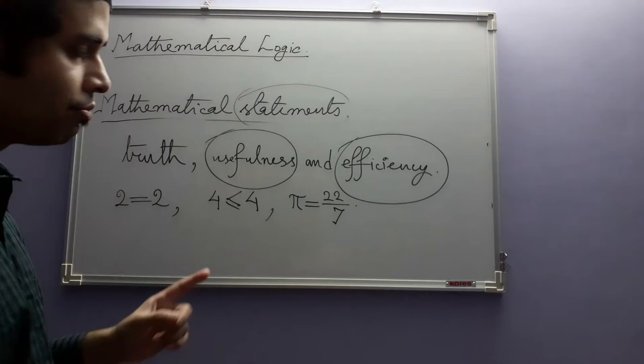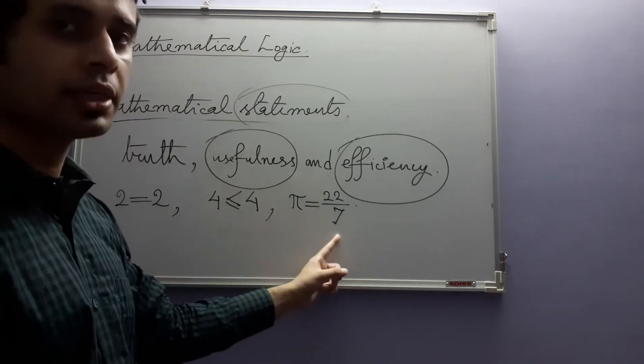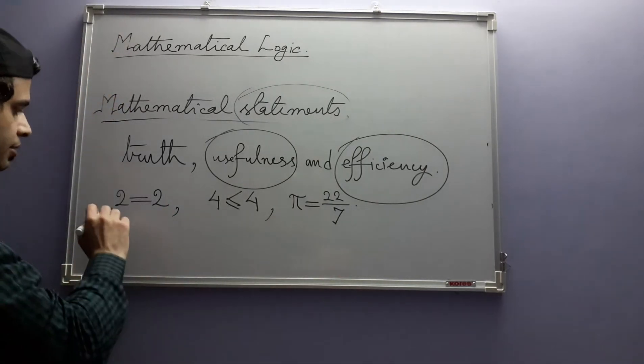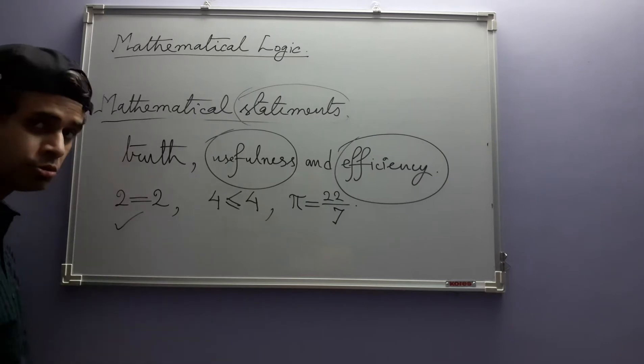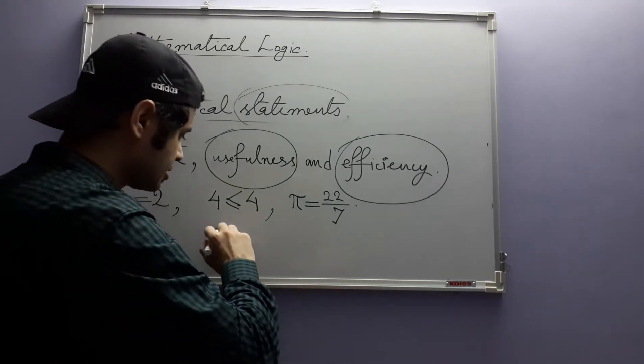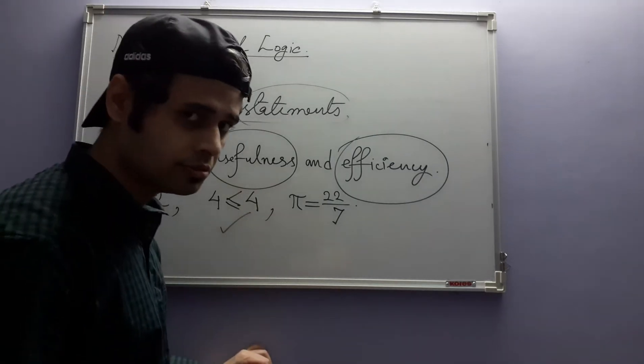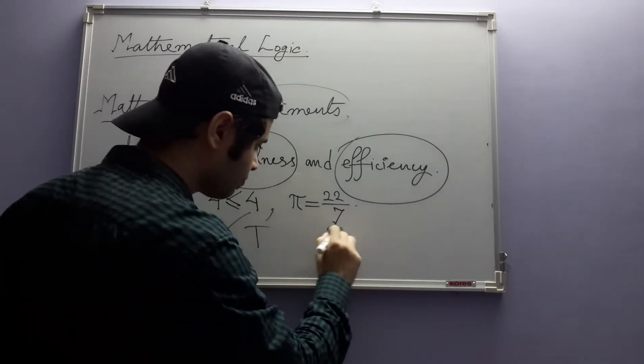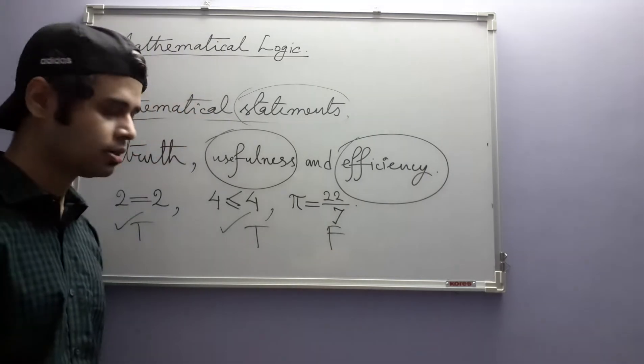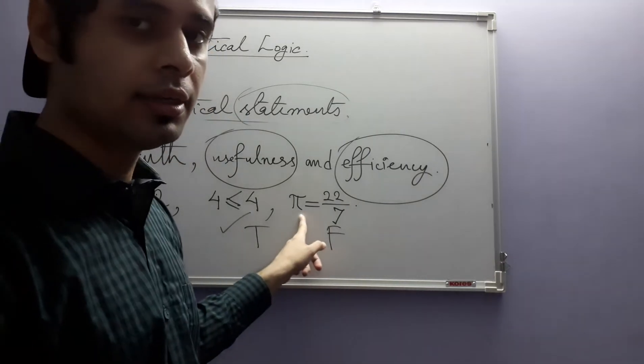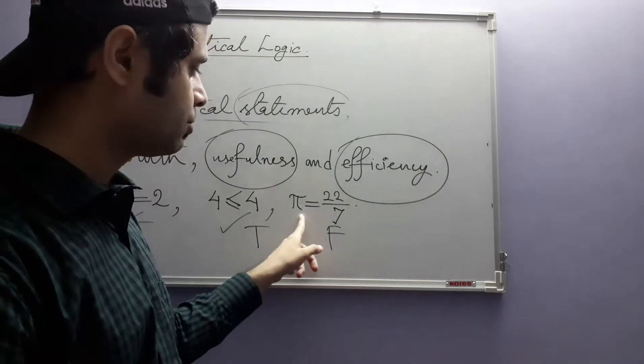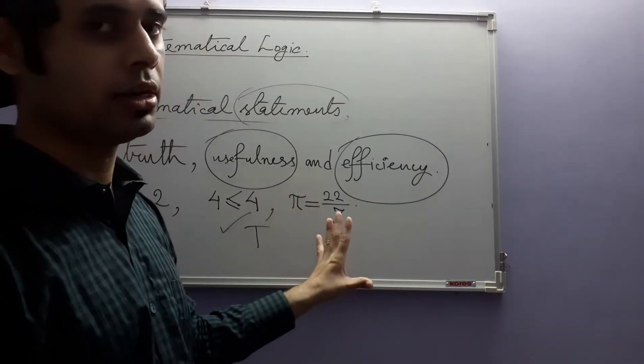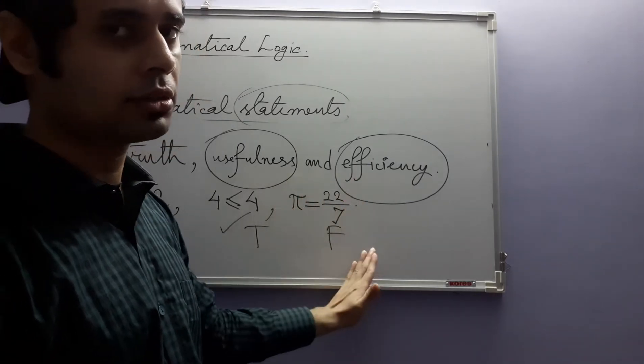These are all well-defined mathematical statements. The first one is true, second one is also true, the third one is false. Because pi is an irrational number and so cannot be equal to a rational number, cannot be equal to a fraction of two integers.